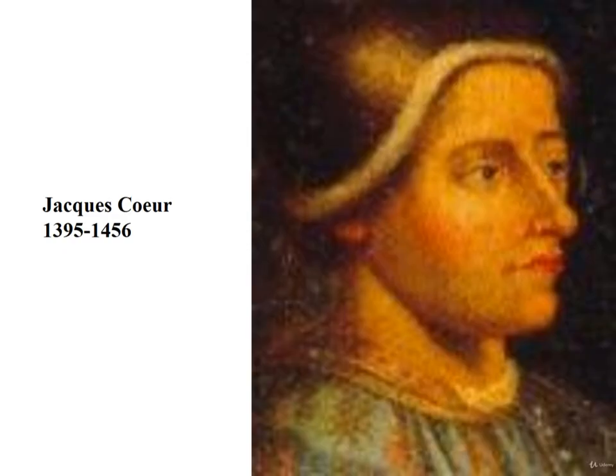About 1429, Jacques Coeur formed a commercial partnership with two brothers named Goddard. In 1432, he was in Damascus purchasing goods for shipment back to France. Four years later, he was appointed master of the Paris Mint and to other high offices. By 1450, he was, by many estimates, the wealthiest Frenchman. He was then accused of poisoning an aristocratic woman and arrested, his property confiscated by the king. He later escaped and made his way to Rome.